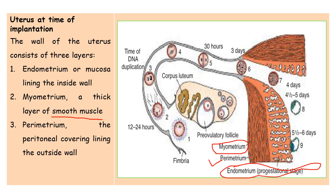Before talking about the process of implantation, let's review the structure of the uterus. The uterus consists of three layers: the endometrium, which is the innermost lining toward the uterine cavity; the myometrium, which is a thick layer of smooth muscles present between the perimetrium and endometrium; and the perimetrium, which is the peritoneal covering and outermost layer of the uterus.